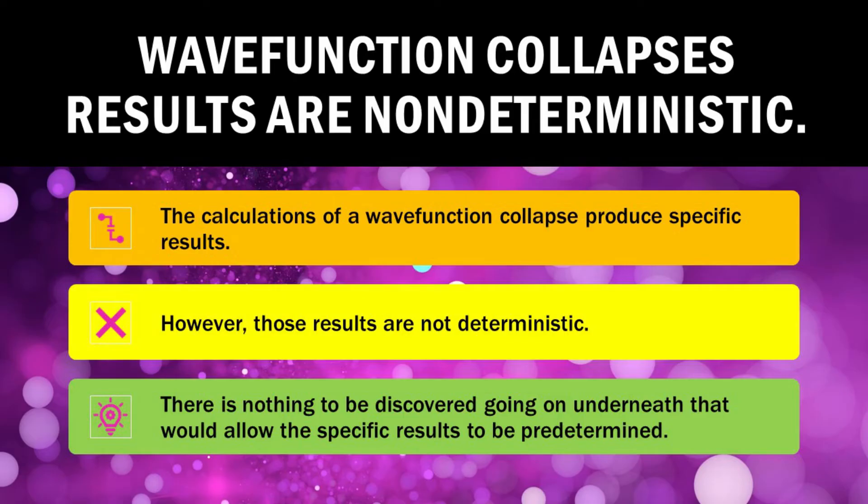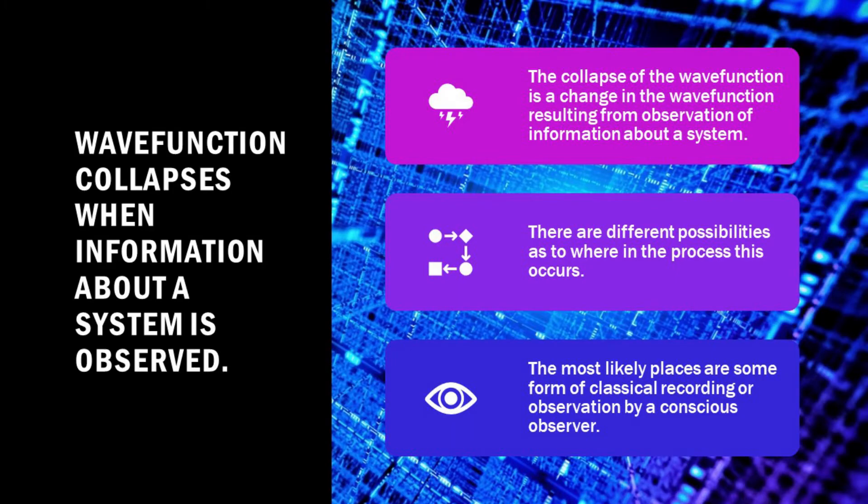The calculations of a wave function collapse produce specific results. However, these results are not deterministic. There is nothing to be discovered going on underneath that would allow the specific results to be predetermined. The collapse of the wave function is a change in the wave function resulting from observation of information about a system. There are different possibilities as to where in the process this occurs. The most likely places are some form of classical recording or observation by a conscious observer.